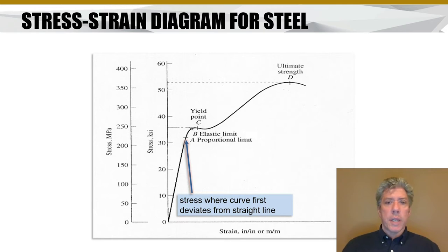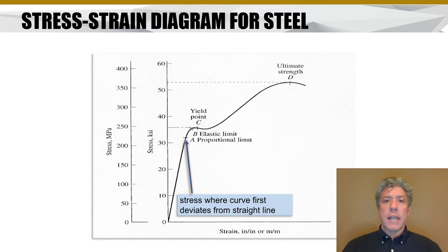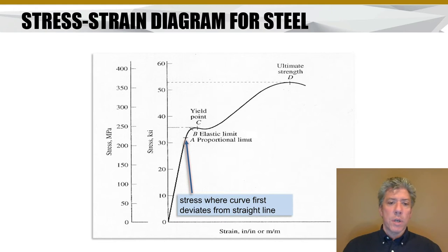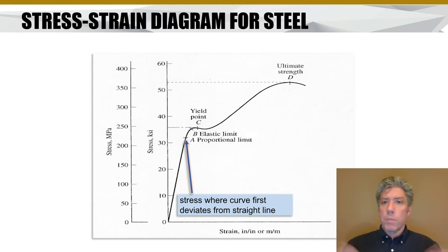Here's a typical stress-strain diagram for steel. There are several points of interest along the way. Strain is on the x-axis; it's dimensionless — inch per inch or meter per meter. The y-axis is the stress applied to the material. You'll notice that stress and strain are linearly related for the beginning section of this curve. We go from 0,0 — at zero load there's no stretching — and as you apply more and more load, the stretching increases proportionally. So this is so far just like a linear spring.